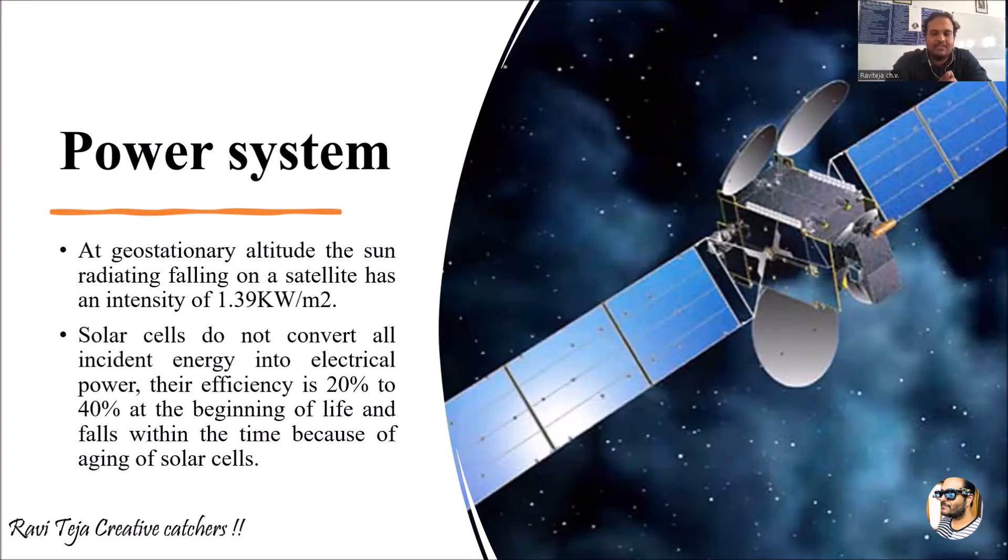Take any satellite - the body of the satellites or the wings of the satellite is fully covered with solar panels. Whenever sunlight or sun rays fall on the solar panel, the photons present in that particular sunlight will be converted into electrical energy, and that energy is stored in several batteries which are attached to the satellites.